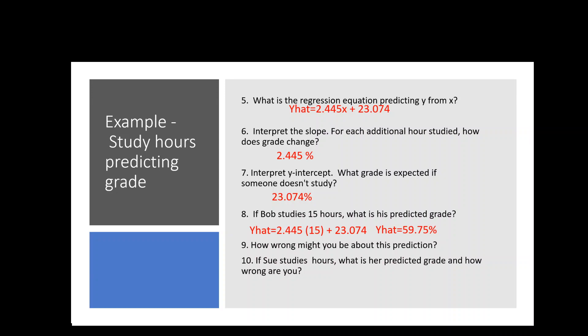But Bob might ask, well, how wrong do you tend to be in your predictions? And so remember, we were able to get that information from the root mean squared error in JASP. And that was, they're out of order, sorry, plus or minus 19.22%. So Bob, I predict you're going to get 59.75% on the test, but I tend to be wrong about 19.2%. So then Bob might take that and try to use that information to decide what his test score is going to be.